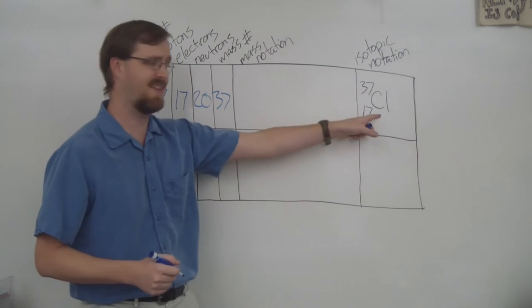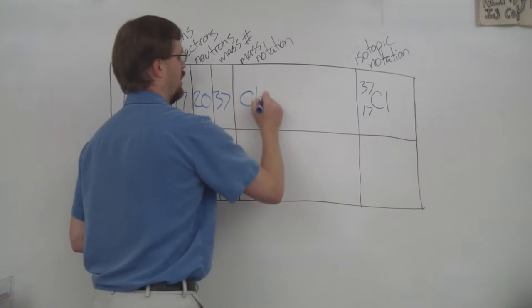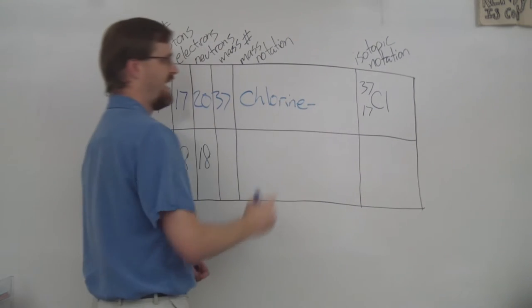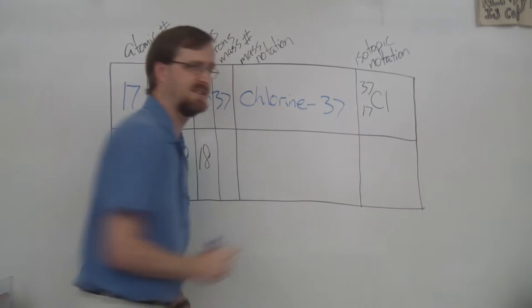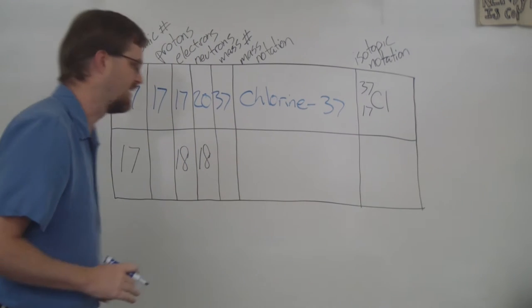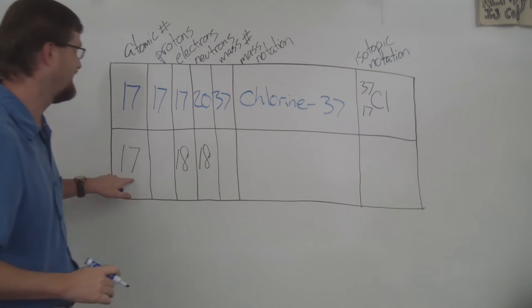And 37 right here is the mass number. Now for the mass notation, all we do is we take the name, which is chlorine, dash the mass, which is 37. All right, very good. Let's take a look at the next row.